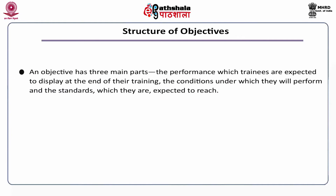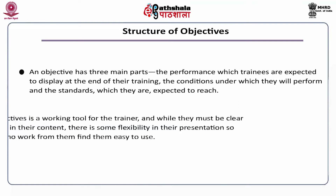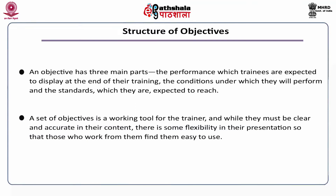Structure of objectives. An objective has three main parts: the performance which trainees are expected to display at the end of their training, the conditions under which they will perform, and the standards which they are expected to reach. A set of objectives is a working tool for the trainer, and while they must be clear and accurate in their content, there is some flexibility in their presentation so that those who work from them find them easy to use.